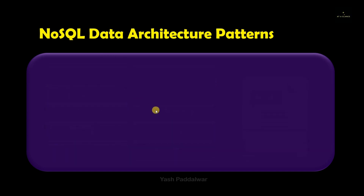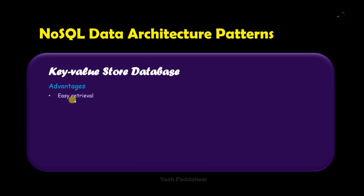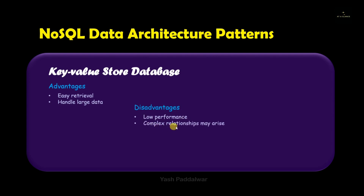Now that we have seen the entire overview and examples of the key-value store database, let's see the advantages and disadvantages. The major advantage is that it can result in the easy retrieval of data because this is the most basic data model and its complexities are less, hence it can handle a large amount of data. The disadvantage is that it has low performance, and when complex relationships arise between some key-value pairs, it can slow down the response time. This key-value pair store concept is used widely in databases like Redis and Riak.